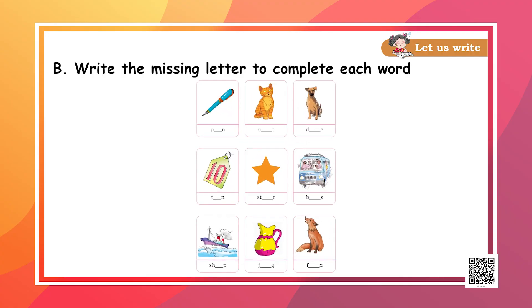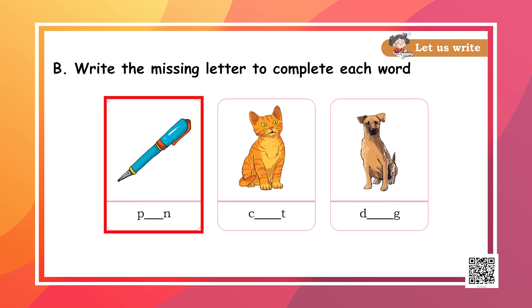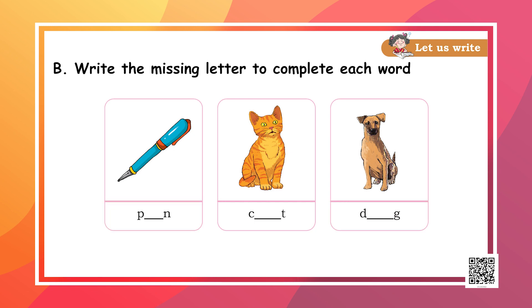Children, you all became very good at listening to the sounds and catching the first sound of the word. Let's look at some pictures now. Like here, I see a pen, a cat, a dog. But do you see their names are missing one letter? Can you identify and write that letter to complete their names?